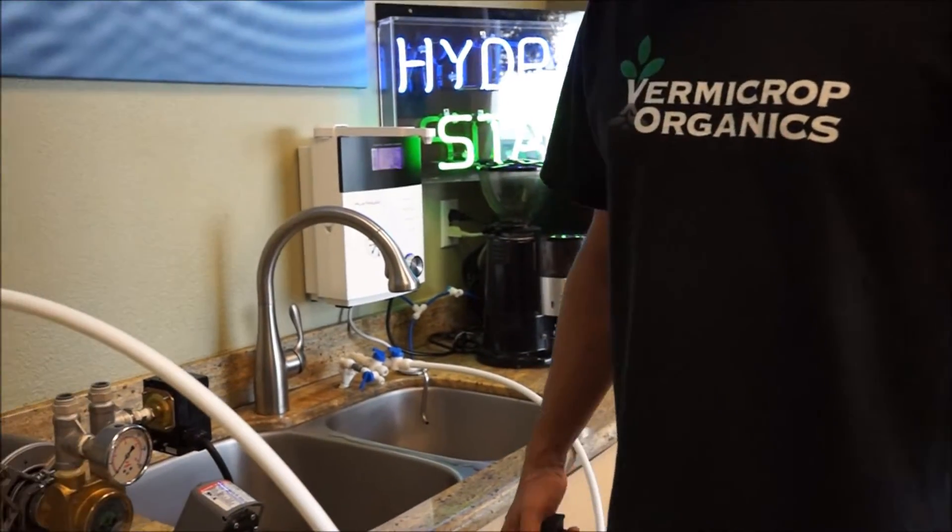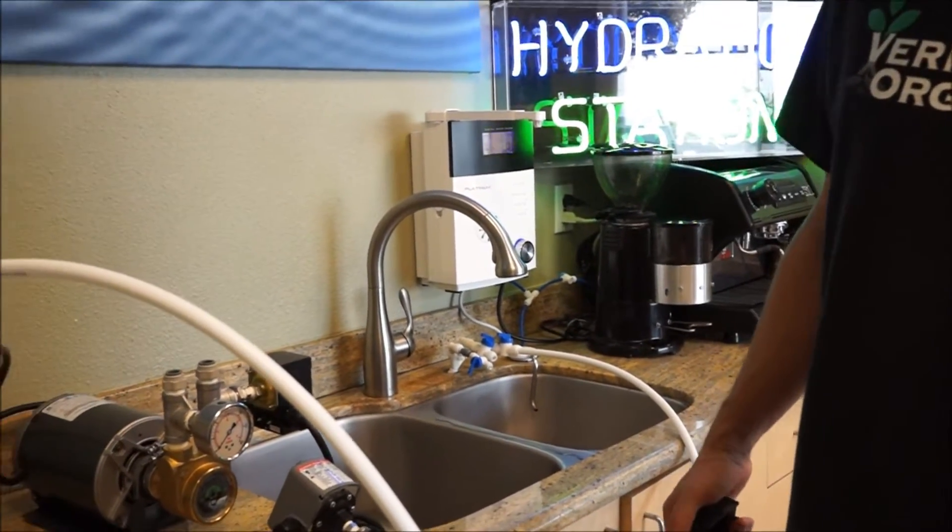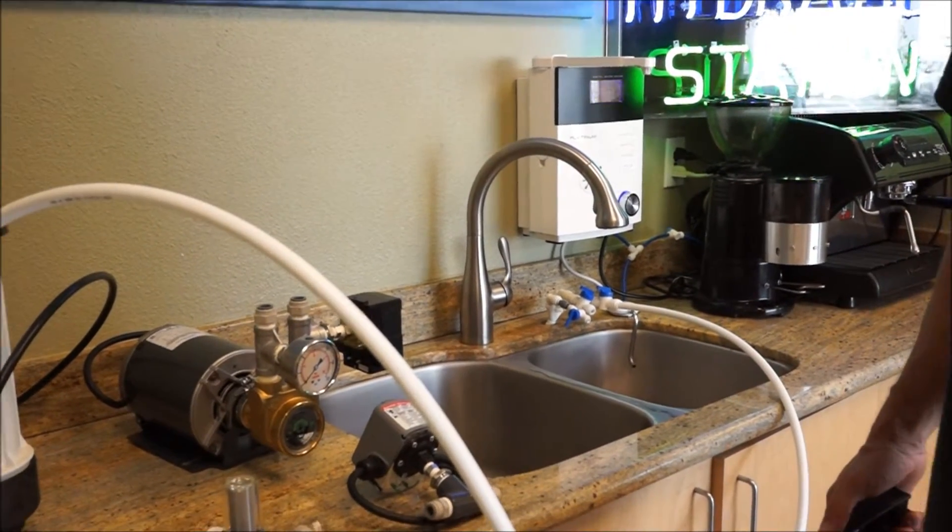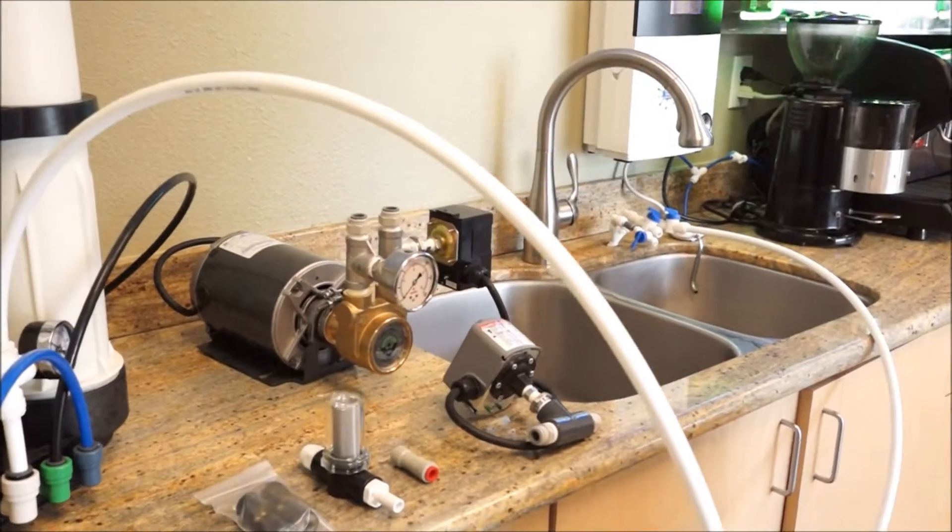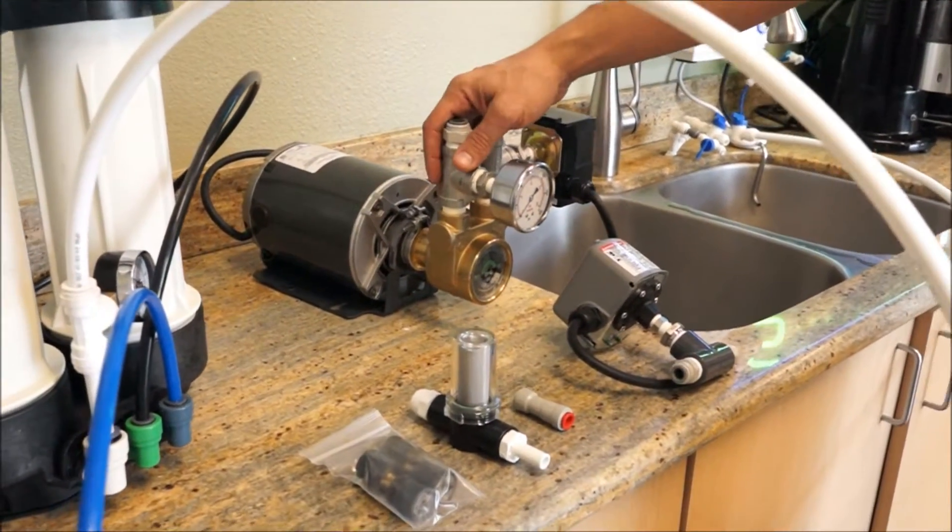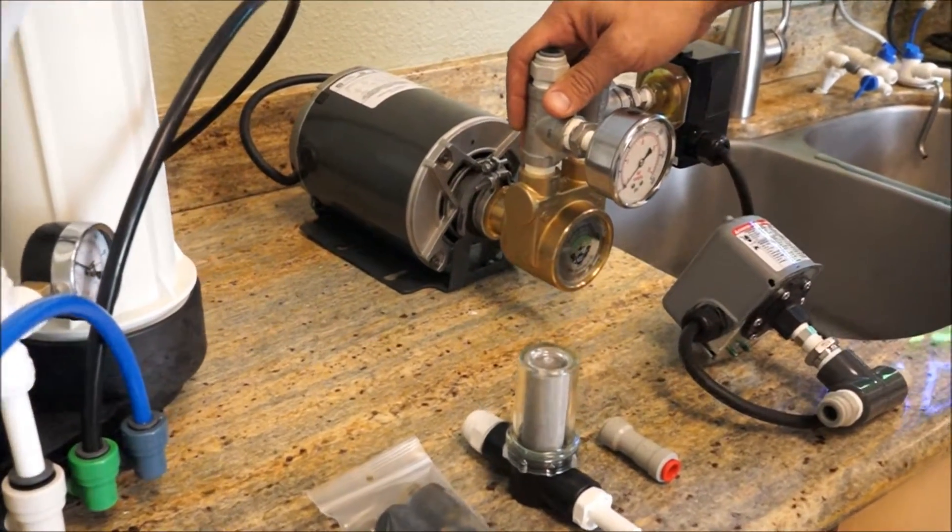Today we're going to go over installation of the Hydrologic Continuous Duty Booster Pump with the Evolution RO1000. This booster pump can be used to boost pressure into any other reverse osmosis system.